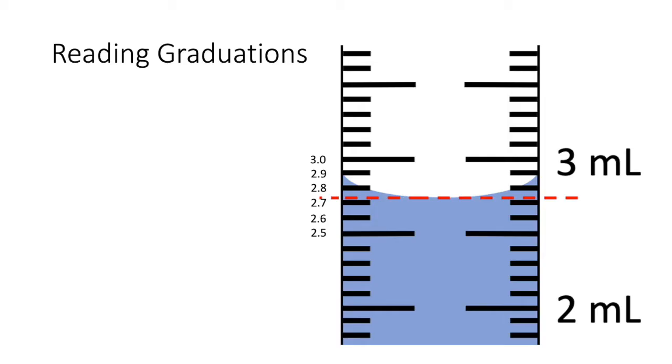And in general, you can estimate a reading to one-fifth the magnitude of a graduation. So in this case, our graduations are 0.1 milliliters, and one-fifth of that is 0.02 milliliters. So we can read to the nearest 0.02 milliliters.